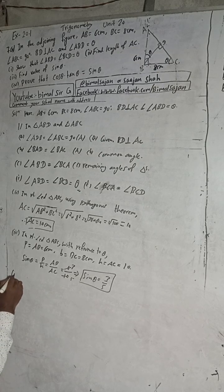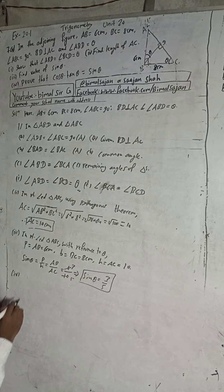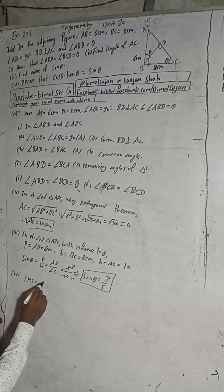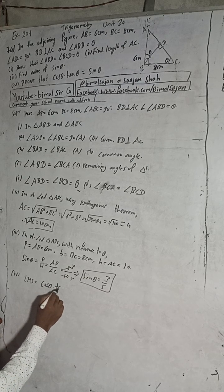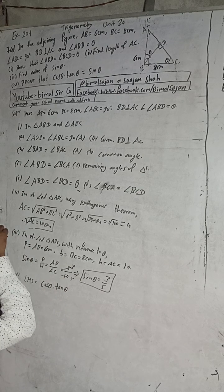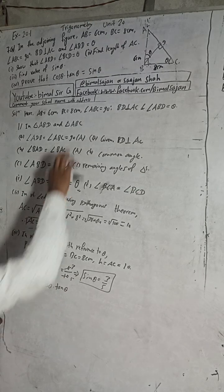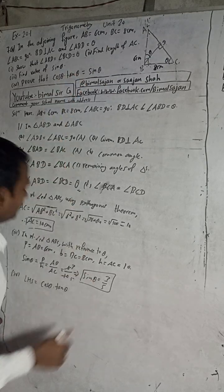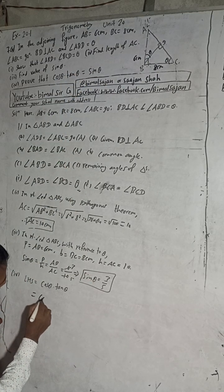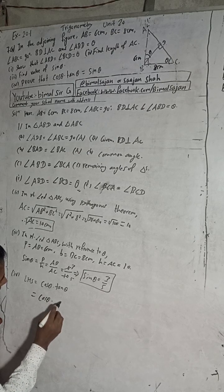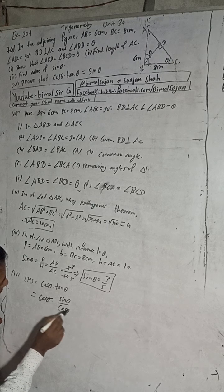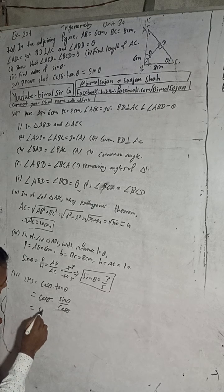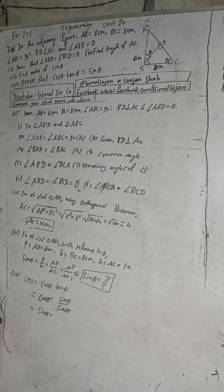Number 4: prove that cos theta into tan theta equals sin theta. Taking LHS: cos theta multiplied by tan theta. We write tan theta as sin theta over cos theta. So LHS equals cos theta multiplied by sin theta over cos theta. The cos theta cancels, and we are left with sin theta, which equals RHS. Therefore LHS equals RHS, and the proof is complete.